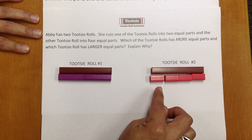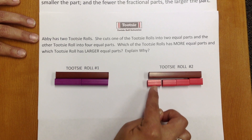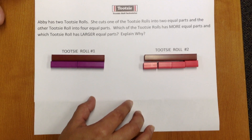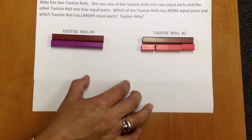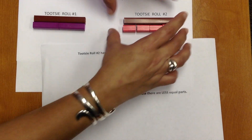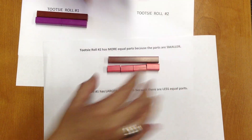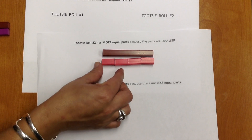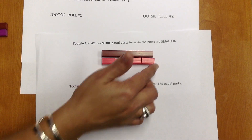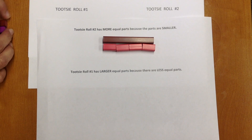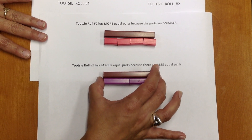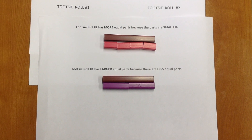And Tootsie Roll two has four parts — one, two, three, four. So Tootsie Roll number two has more equal parts because the parts are smaller. And Tootsie Roll number one has larger equal parts because there are fewer equal parts.